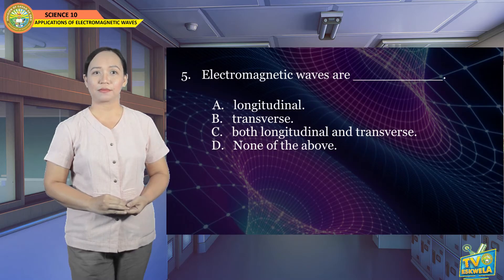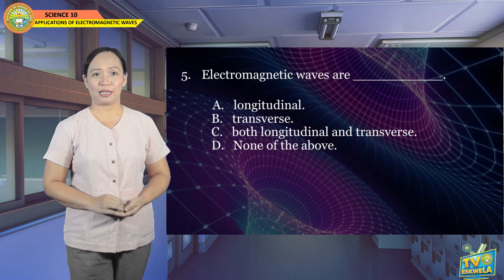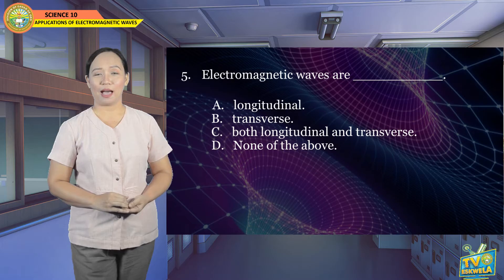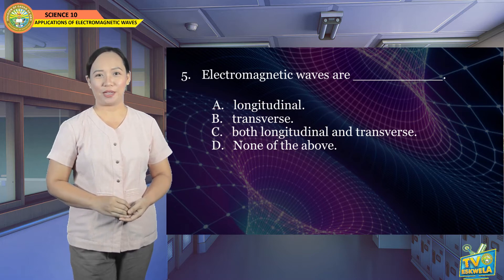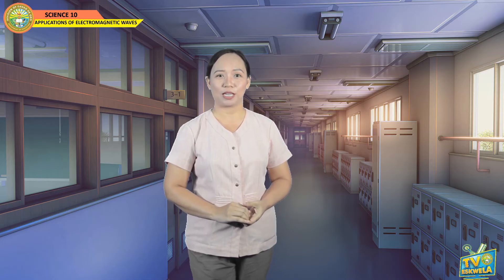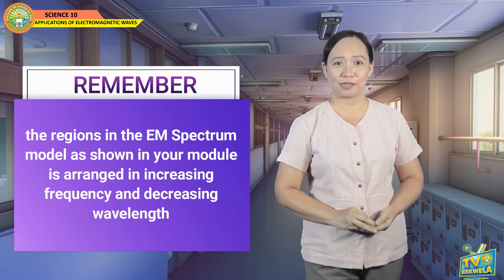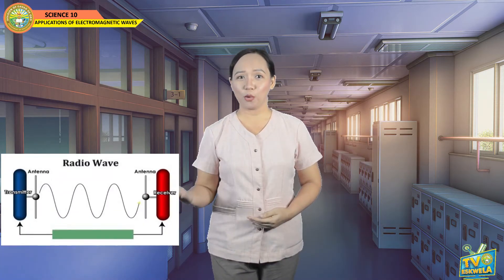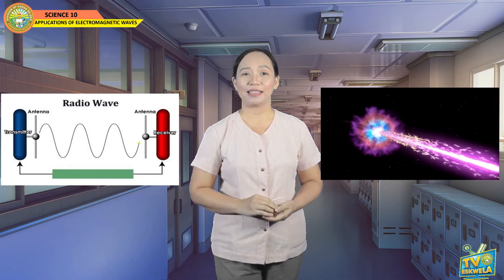Number 5: Electromagnetic waves are... A. Longitudinal, B. Transverse, C. Both longitudinal and transverse, D. None of the above. It is letter B — Transverse wave. If you got 4 to 5, you did great! If lower, go back to Module 1. Remember, the EM Spectrum is arranged in increasing frequency and decreasing wavelength — radio waves have the longest wavelength and least frequency, while gamma rays have the shortest wavelength and highest frequency.